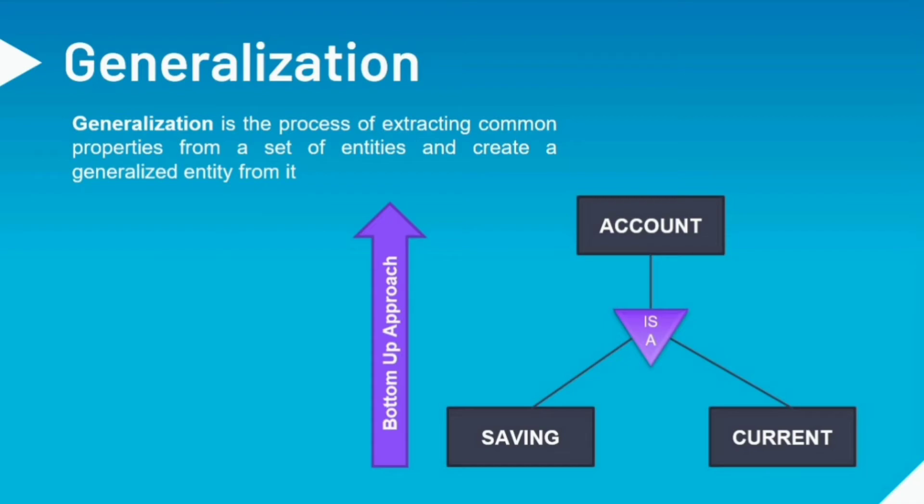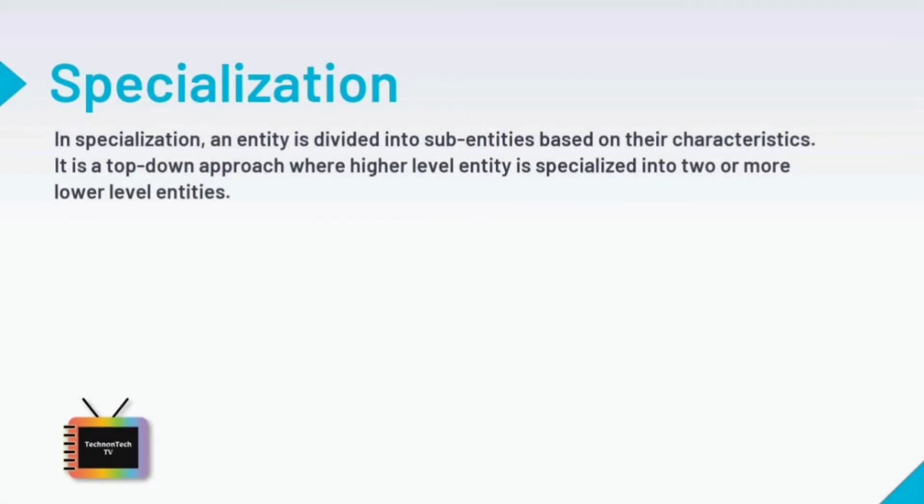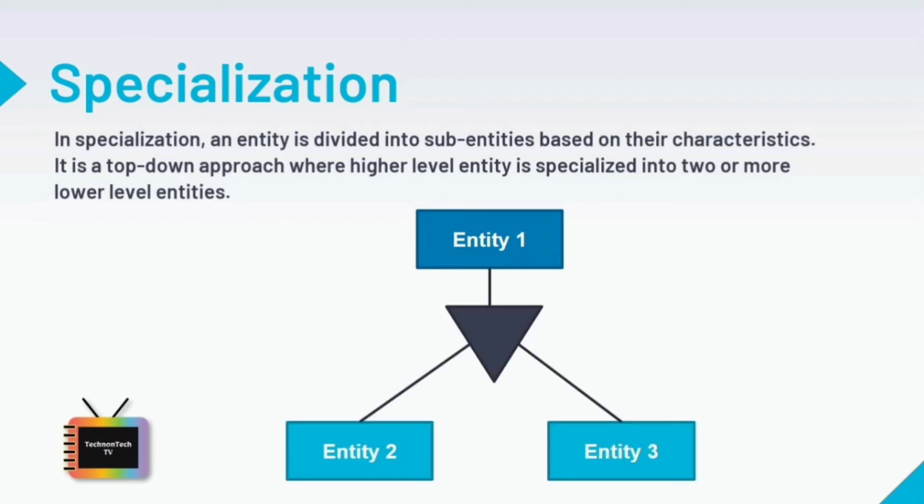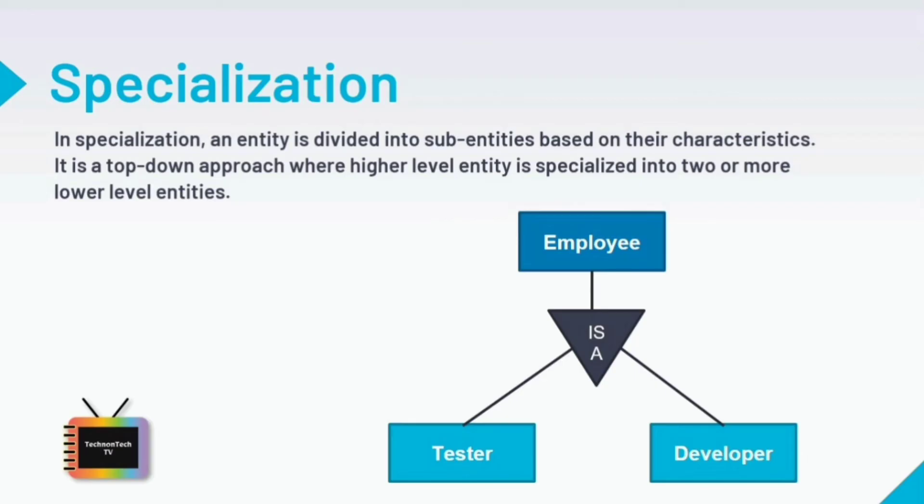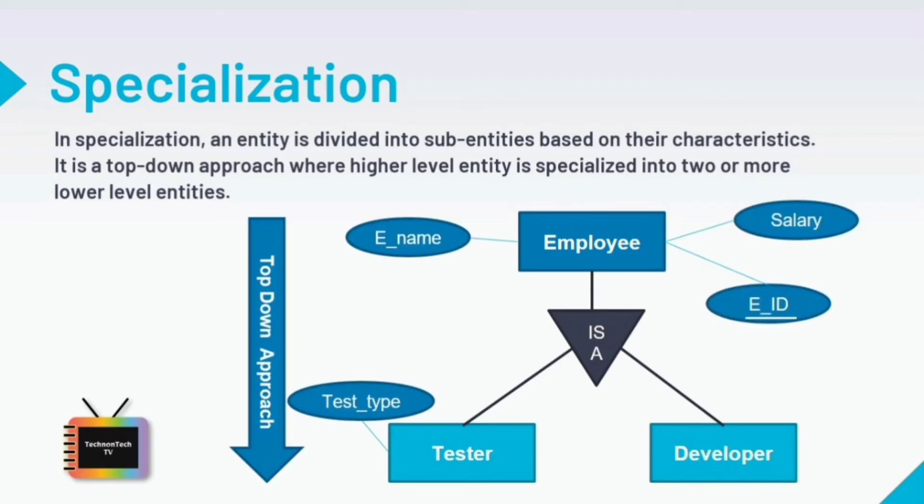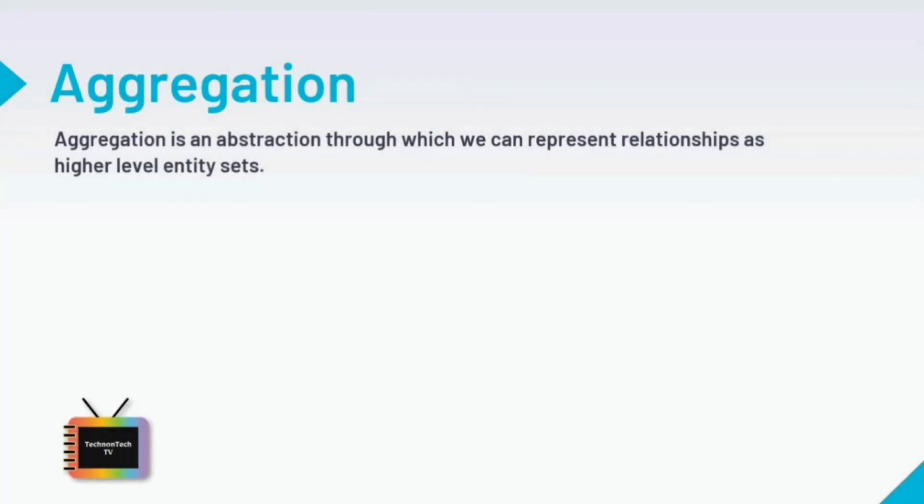Next is Specialization. Specialization is opposite to Generalization. It is a top-down approach in which one higher-level entity can be broken down into two lower-level entities. For example, Employee entity in an employee management system can be specialized into Developer, Tester, etc. In this case, common attributes like employee name, salary, and employee ID become part of the higher-level entity Employee, and specialized attributes like tester type become part of the specialized entity Tester.